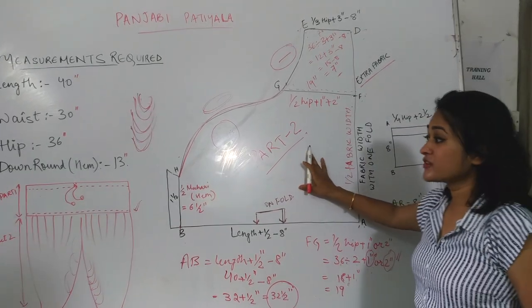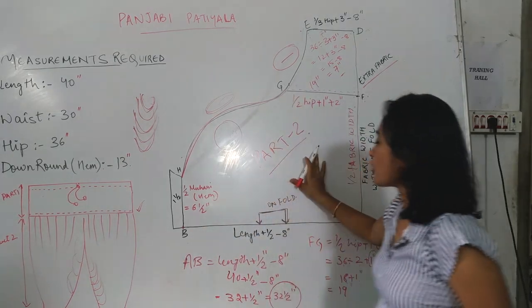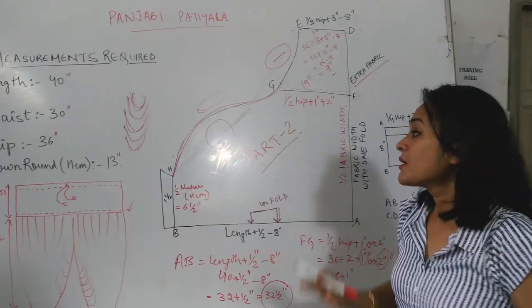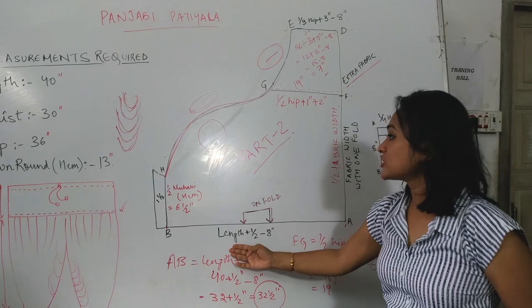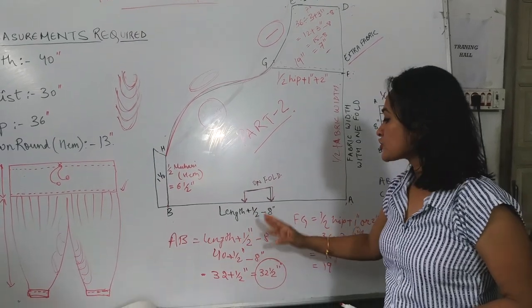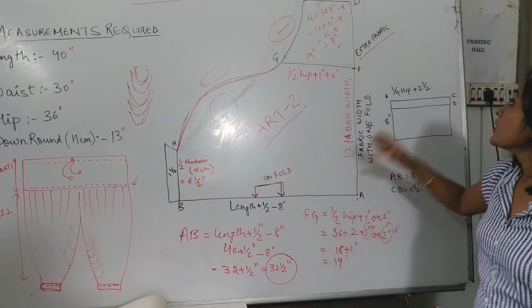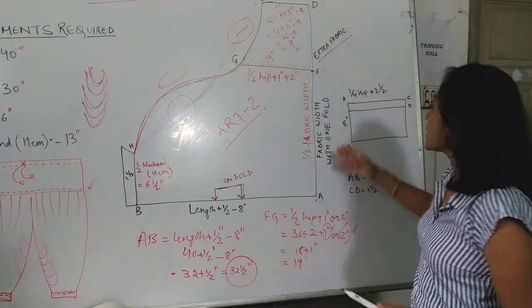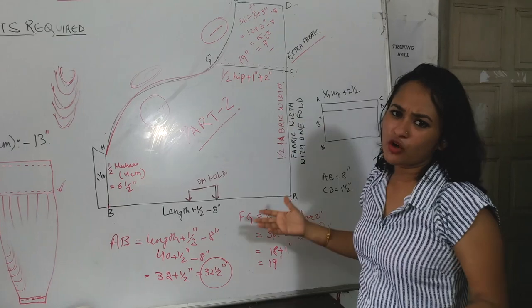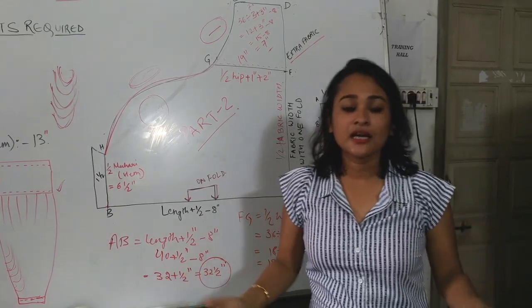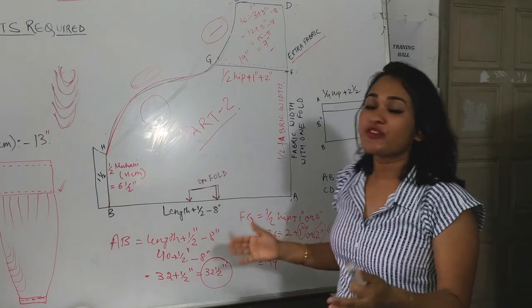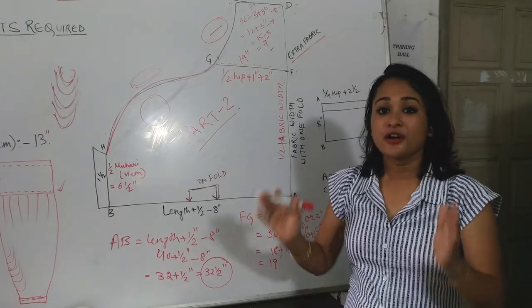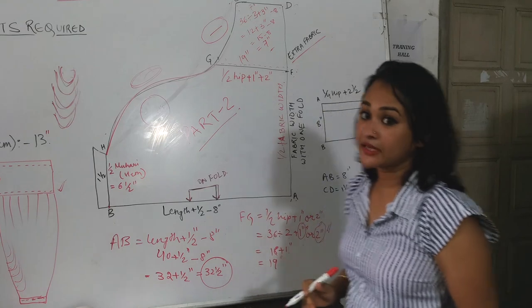So this is the drawing of part 2. Whatever the measurements may be, just put this formula: whatever the length may be, it will be length plus half minus 8 inches. Whatever the hip may be, it will be hip divided by 3 plus 3 inches minus 8 inches. The extra fabric depends on how much fabric width you have. When you buy fabric, keep the fabric width in mind.